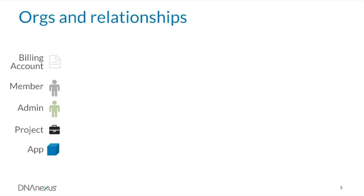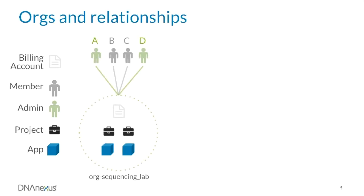In the past few minutes, we've shown simple examples where a given user belongs to only one org. However, users can belong to and even administer a number of orgs. For example, if a user is working with two labs with two different budgets, the user may need to create and work in projects billed to the two respective orgs. In this example, we have our original org, Org Sequencing Lab, and a second org, Org Research Group.